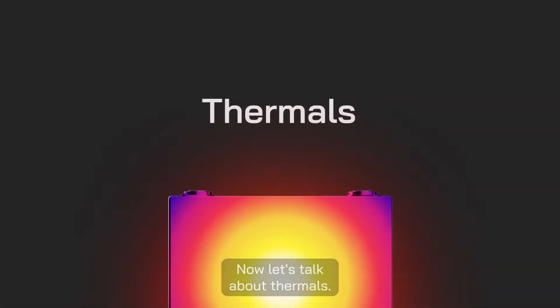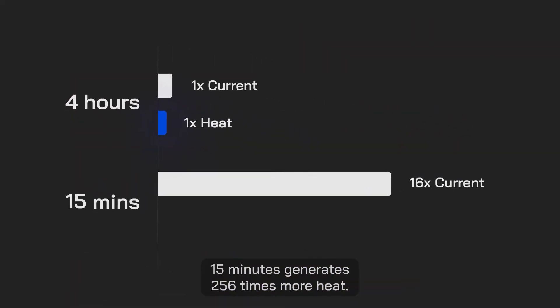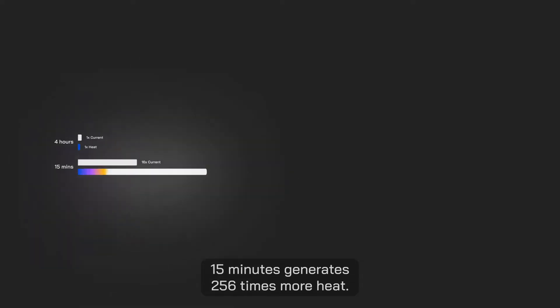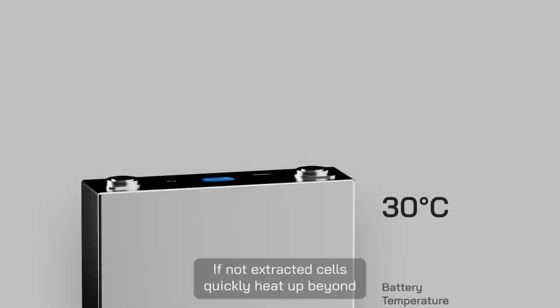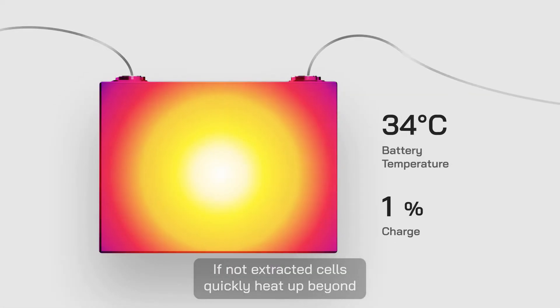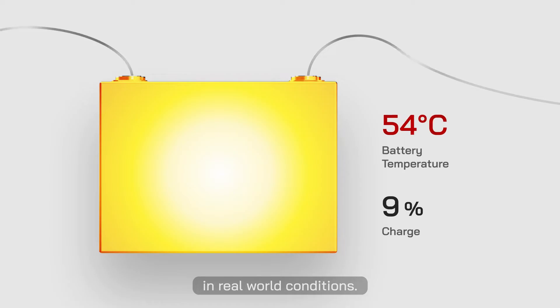Now let's talk about thermals. First, reducing charging time from 4 hours to 15 minutes generates 256 times more heat. That's a lot of heat. If not extracted, cells quickly heat up beyond the temperature threshold and barely rapid charge in real-world conditions.